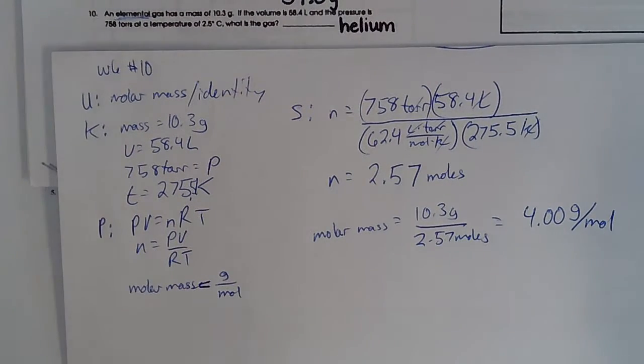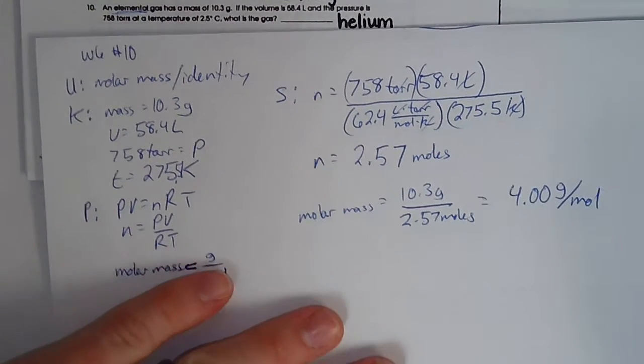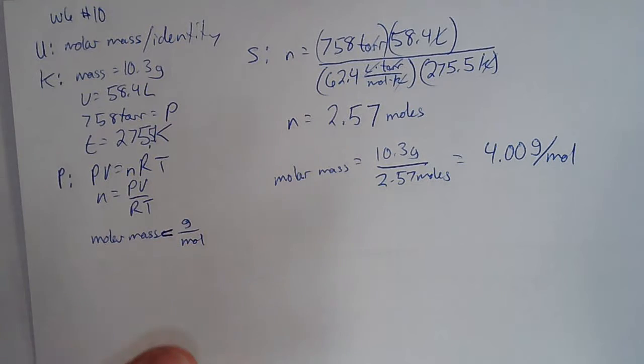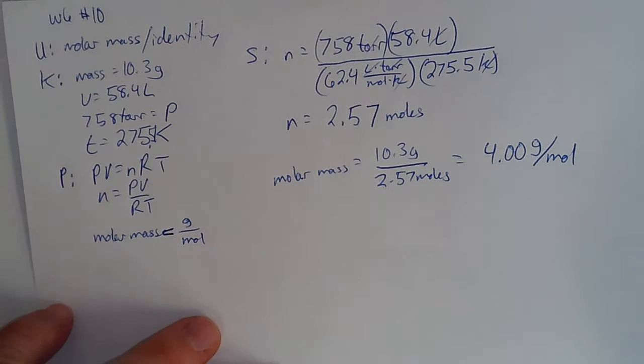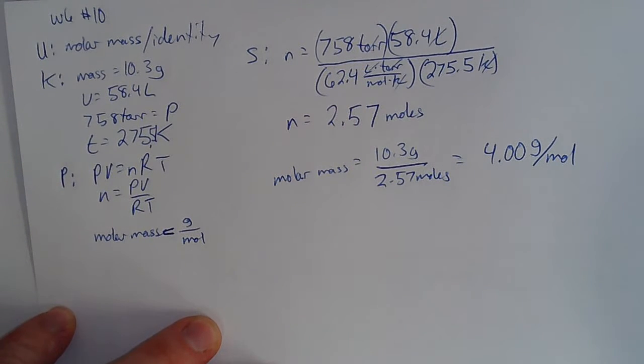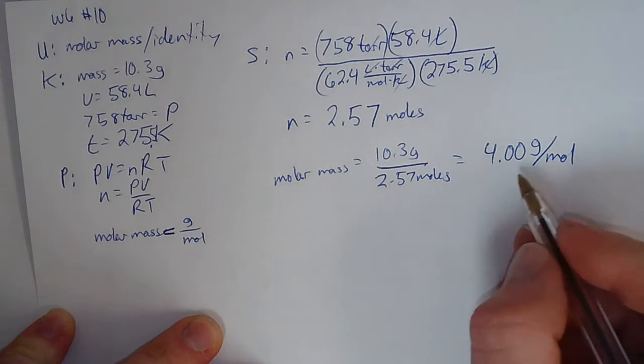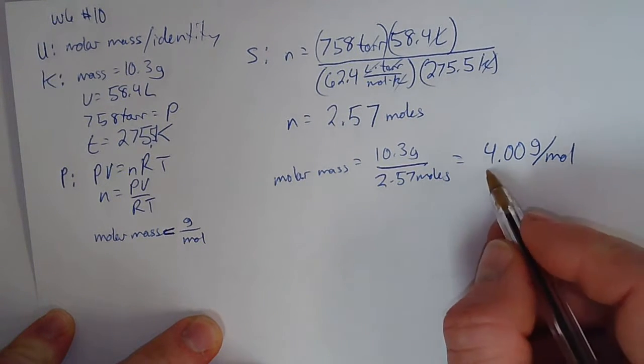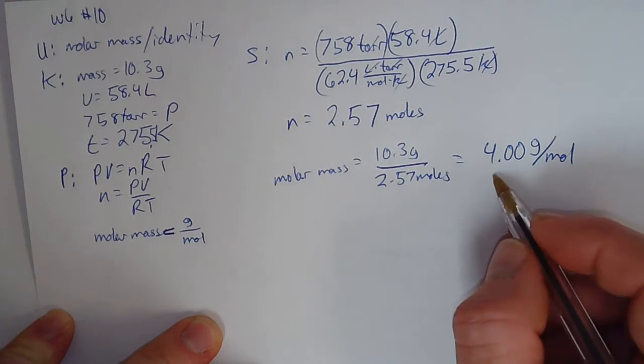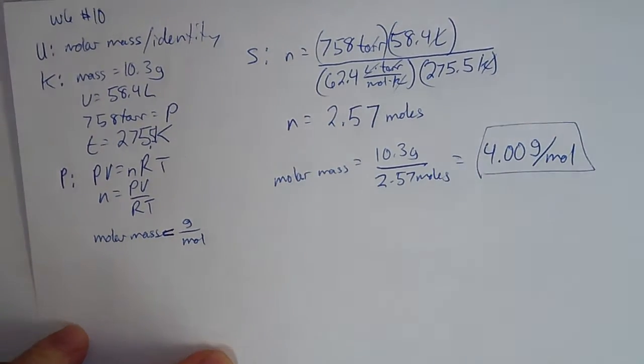I get 4.00 as the molar mass. So if you look at the periodic table, helium is the only gas—the closest diatomic gas would be hydrogen, which has a mass of 2, and then nitrogen is the next diatomic gas and it has a mass of 28. So helium is the only one that's anywhere close to 4 grams per mole. So that would have to be the answer.